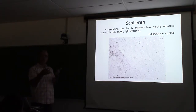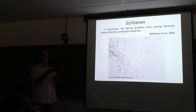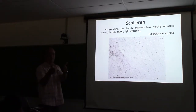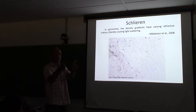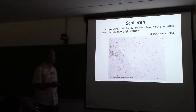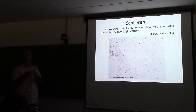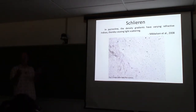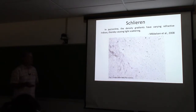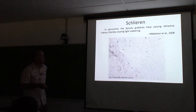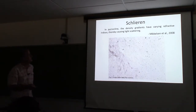Filaments with different densities have different refractive indices and they steer the light around. The light gets jogged around, and this can be viewed as equivalent to a particle scattering light and causing attenuation.